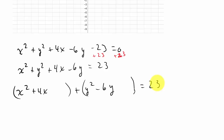Now we need to complete the square. Hopefully you remember how to do this. Look at the number in front of x, which is 4. We halve it to get 2, then square it to get 4. So we add 4 inside the x group, and since we added 4 to this side of the equal sign, we have to add 4 to the other side as well.